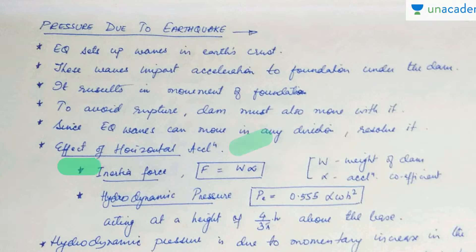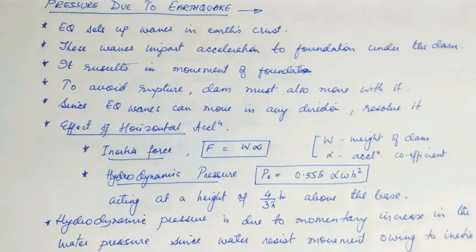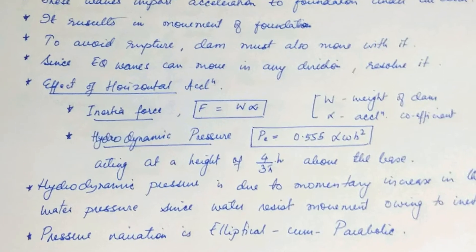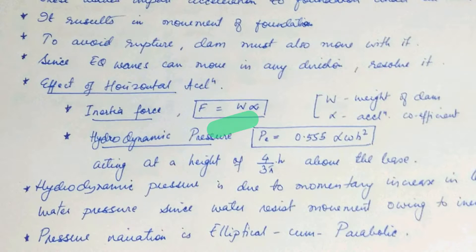Now let's see the effect of horizontal acceleration. The horizontal acceleration imparted by the earthquake waves results in the formation of inertia force, or it can be a hydrodynamic pressure. Inertia force f is actually equal to w alpha, w being the weight of the dam and alpha is nothing but acceleration coefficient. So the inertia force actually acts in a direction opposite to the acceleration imparted by earthquake forces.